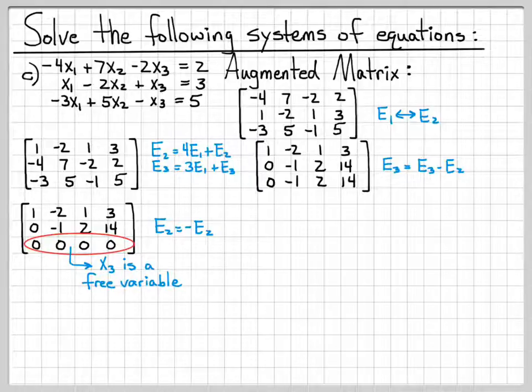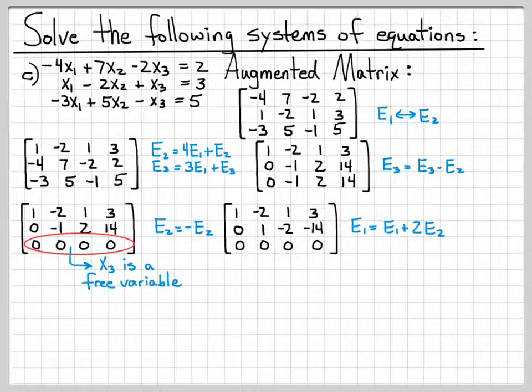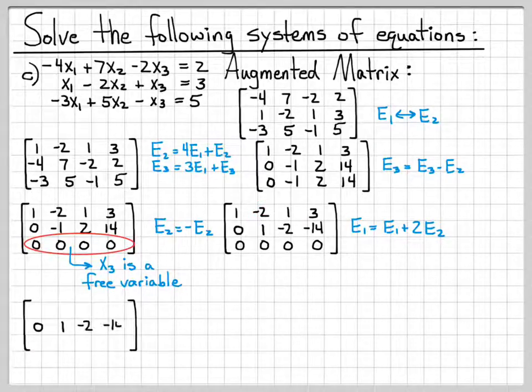Let's go ahead and negate equation 2 and turn that negative 1 into a 1. Just a little bit easier to read. And then finally, let's let E1 equal E1 plus 2E2. We can get a 0 right here. Simplify that equation a little bit.